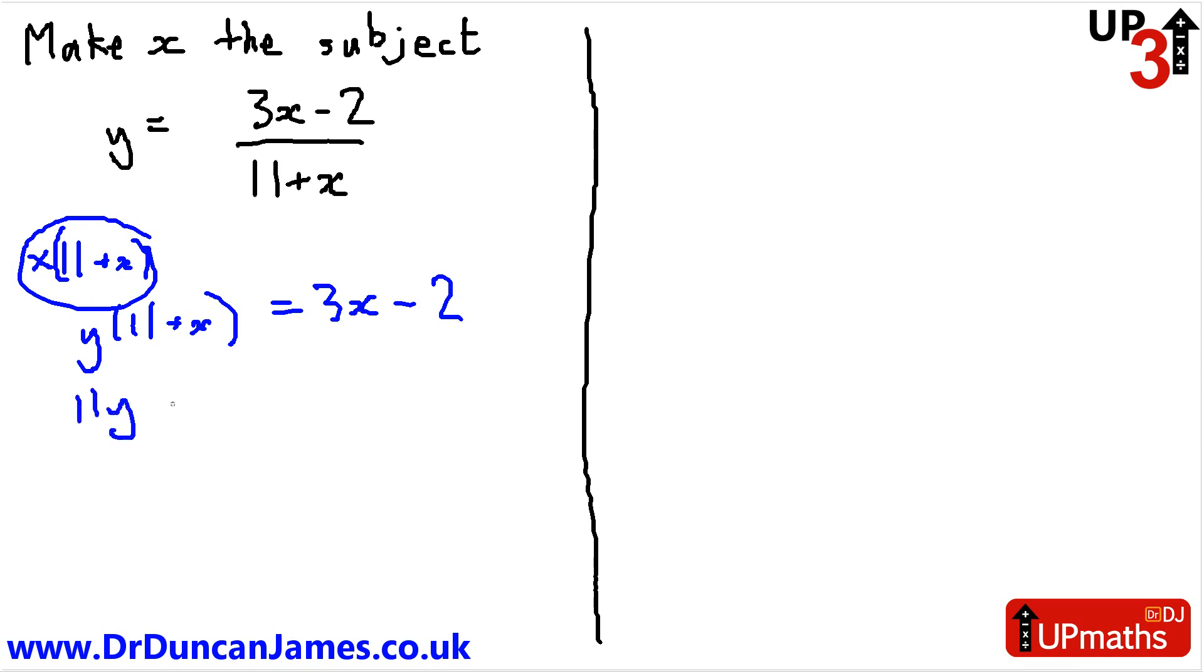Let's get rid of the brackets there in the way as well. 11y plus xy equals 3x minus 2. The next bit's the tricky bit. It doesn't need to be, well, let's take a positive spin on this. Let's think: how can we make this feel easier?